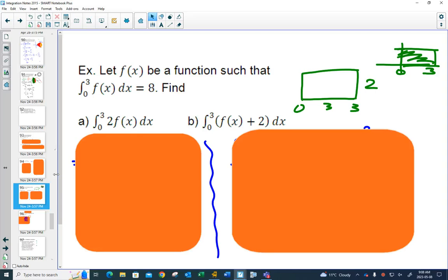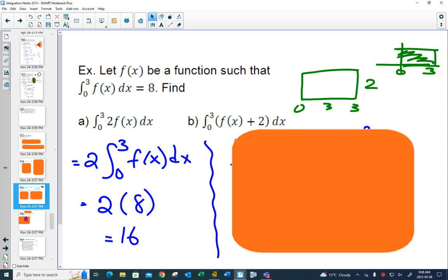Alright, let's see how you did on this one. If they tell us that the area under the curve from 0 to 3 of some function is 8, and now we double that, well, that 2 could come out in front. And since we know this area is 8, that 2 inside there would just make the entire area 16.